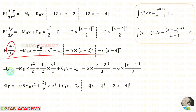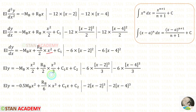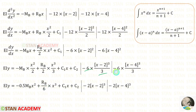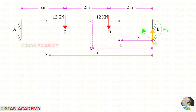Let us integrate this equation again. When we integrate dy/dx we get y. When we integrate X we get X²/2. When we integrate X² we get X³/3. When we integrate C1 we get C1·x. C2 is the new constant. When we integrate (X minus 2)²/2 we get (X minus 2)³/6, and similarly (X minus 4)²/2 gives (X minus 4)³/6.